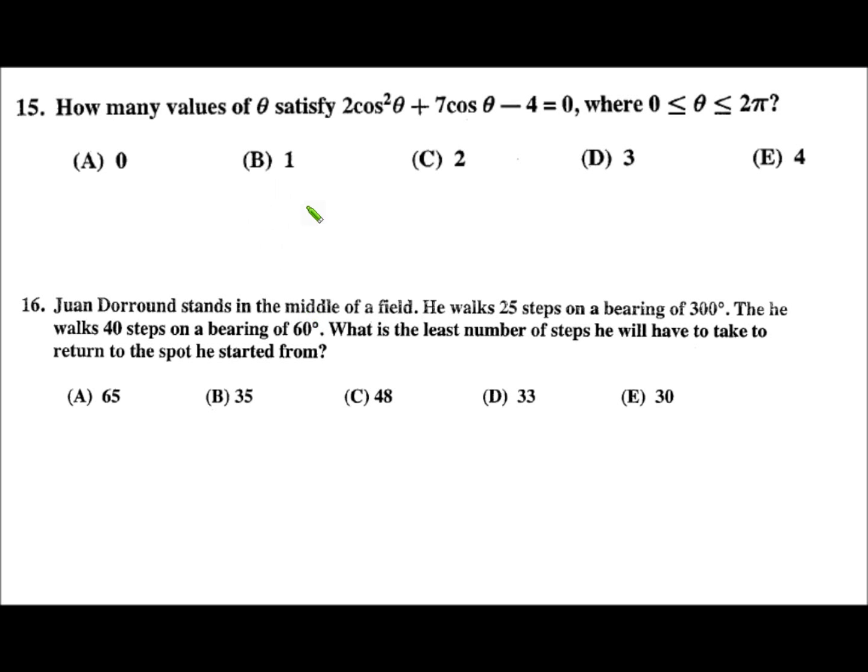Number 15. How many values of theta satisfy 2 cosine squared theta plus 7 cosine theta minus 4 equals 0, where theta is greater than or equal to 0 and less than or equal to 2 pi? Basically, theta is some value between 0 and 2 pi, including both endpoints, so we do need to look at the endpoints. We can interpret this as a function. It's a trig function, a trig equation really.